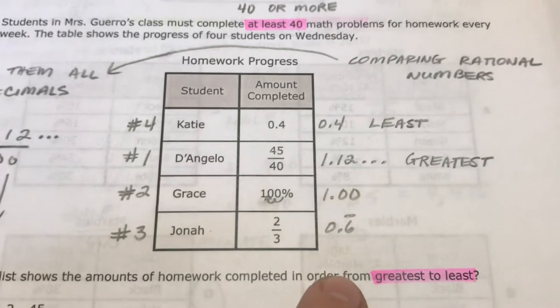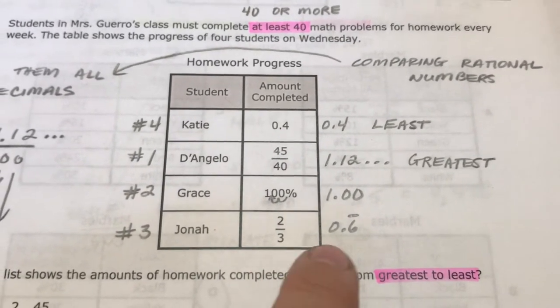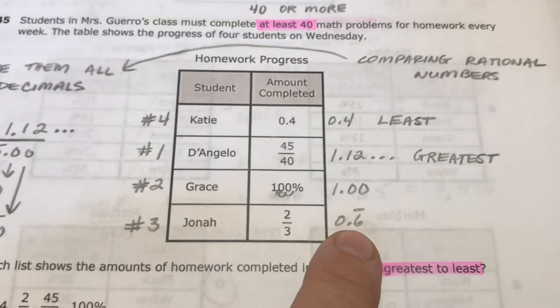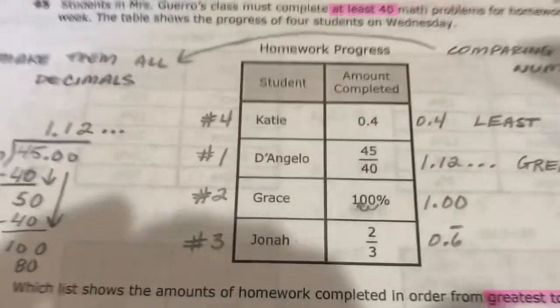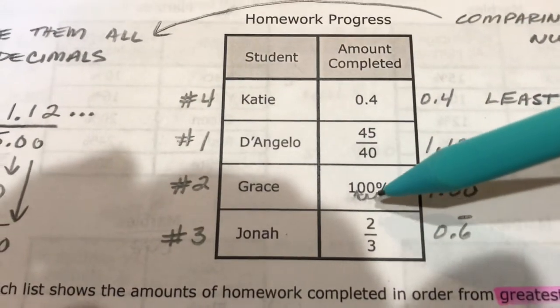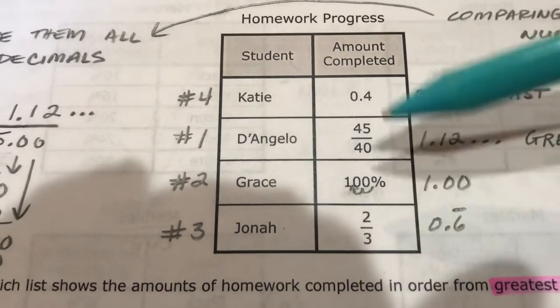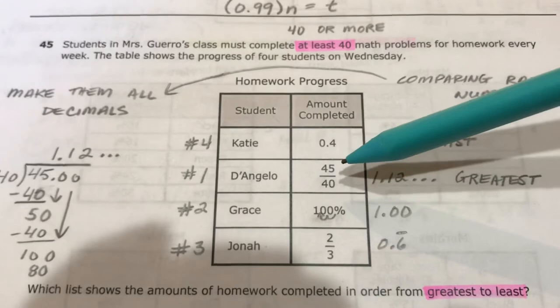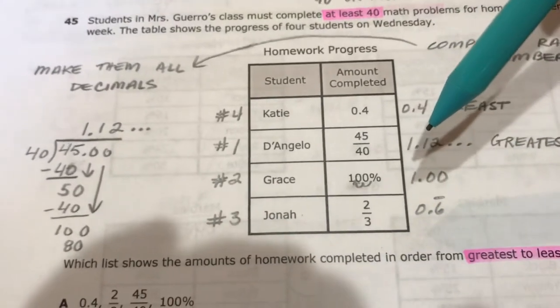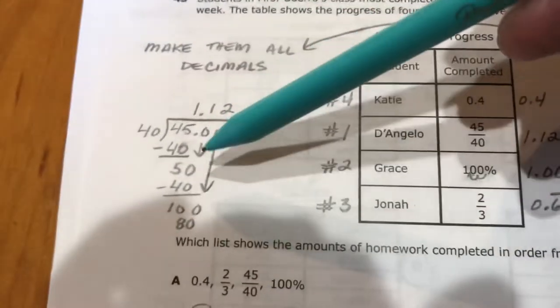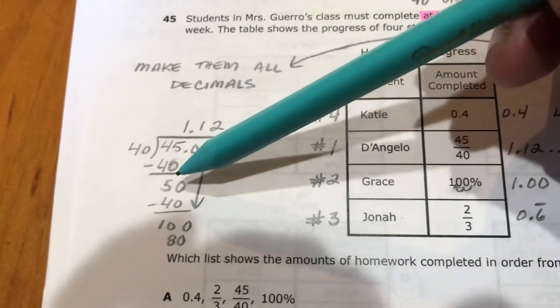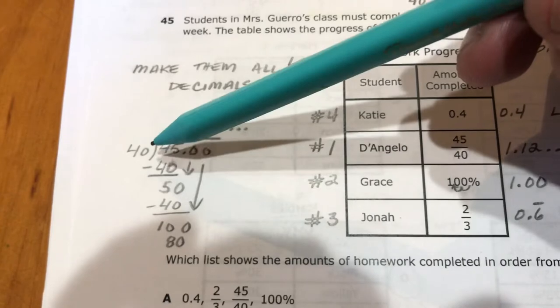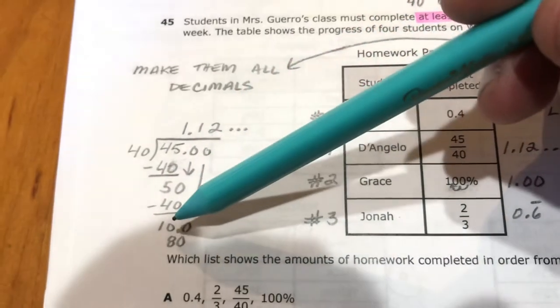So this one's already a decimal. You should have 2/3 memorized, 2/3 is 0.6 repeating. So now that one is easy to make into a decimal. 100% is one whole, 100% is all of it. So you can even use your percent to decimal strategy and move that over twice and get 1.00. 100% is one whole. 45 over 40, I couldn't really think of a fast way to change that to a decimal, so I just did the division.